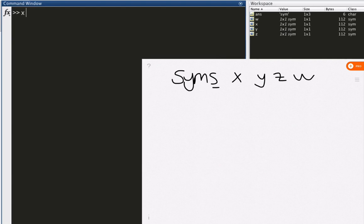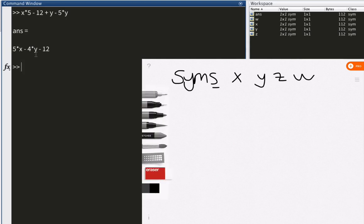So we can do some calculations. Let's say x times 5 minus 12 plus y minus 5 times y. And what's going to happen is this. 5x minus 4y minus 12. Absolutely brilliant. I really like it.